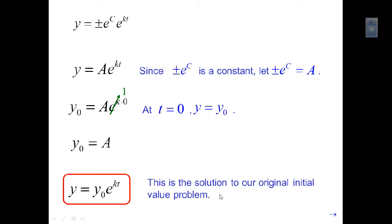This is the solution to our original initial value problem. If we have values for the starting y and some value along the way, we can plug in and find k. The constant k stays the same throughout the entire problem — once you solve for k, and you know the original y, you can plug in any t value and find the corresponding y.